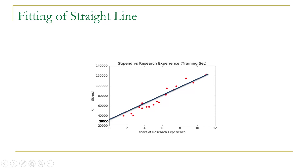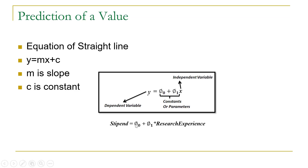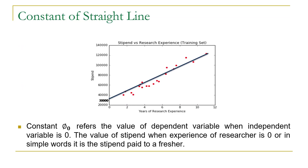So x will be research experience and y will be stipend. This equation will become: stipend equals phi 0 plus phi 1 into research experience. Here research experience is our x, the independent variable, and stipend is the dependent variable, equivalent to y. It means the value of stipend can be predicted on the basis of research experience. Now, phi 0 is a constant and it refers to the value of the dependent variable — in this case stipend — when the independent variable, research experience, is 0. In simple words, it indicates the stipend to be paid to a fresher.